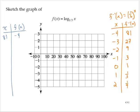81, negative 4. 27, negative 3. 9, negative 2. 3, negative 1. 1, 0. One-third, 1. One-ninth, 2.